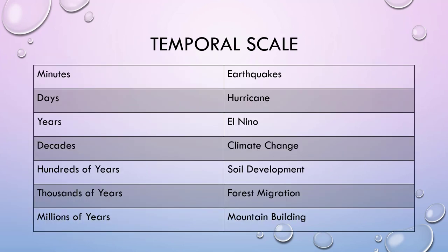Let's talk about temporal and spatial scales. These are important when thinking about the length of time you're going to be observing something. Earthquakes happen in minutes; hurricanes take days; the pattern of El Niño takes years; climate change is observed in decades; soil development is seen over hundreds of years; forest migration takes thousands of years; and to build a mountain, it takes millions of years. That's what a temporal scale looks like.